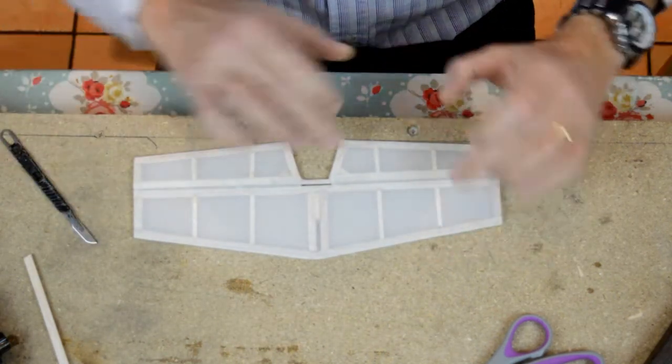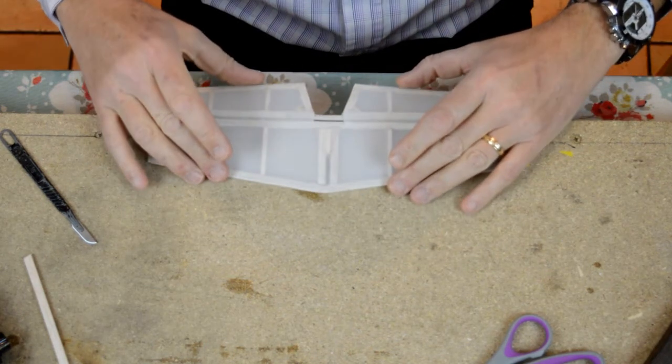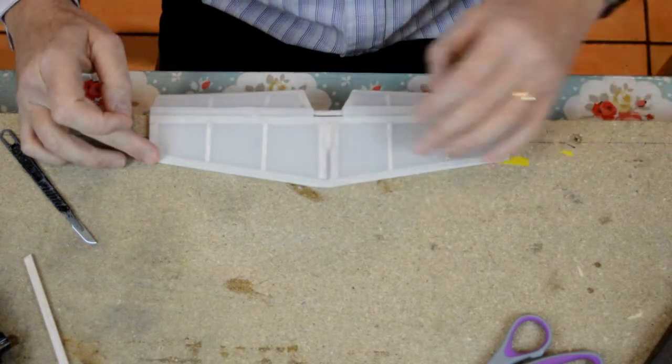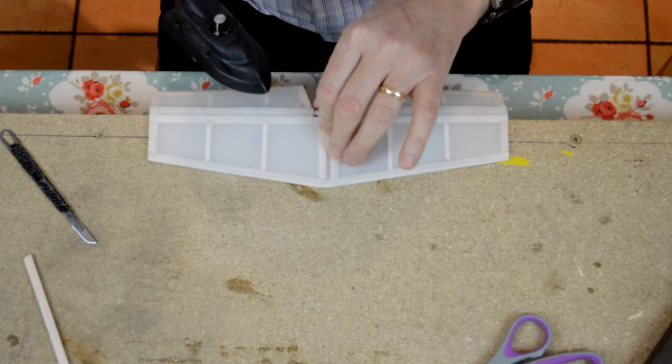And this side I've done exactly the same, so I've tacked across the top very lightly, very quickly. I'm now just going to bend this over so the elevator is hanging down by about 30-odd degrees.